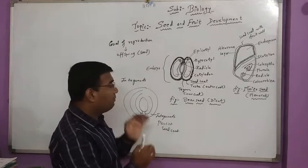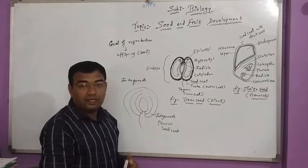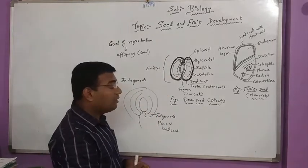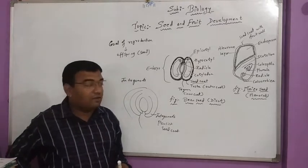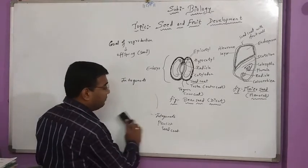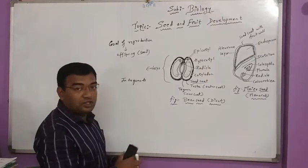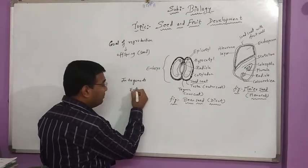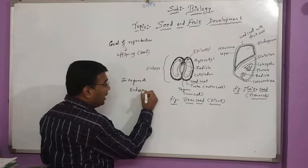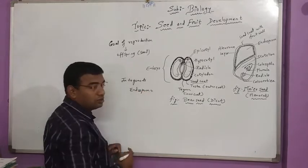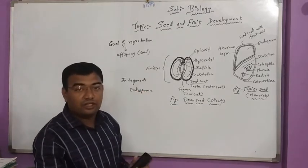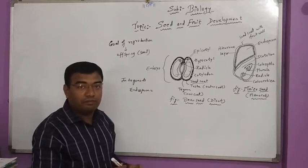And seed coat protects the internal part that is the endosperm. So now the next concept which is in front of us is about the endosperm. Endosperm is a nutritive tissue which provides the nutrition for the growth and development of embryo.